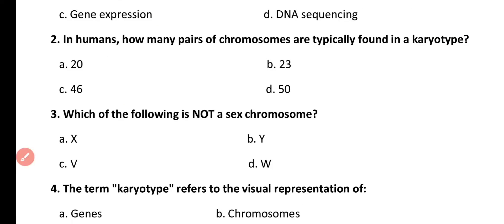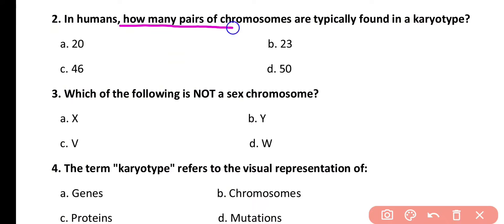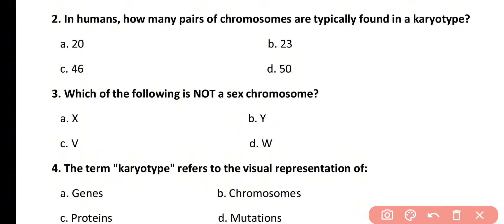Question number 2. In humans, how many pairs of chromosomes are typically found in a karyotype? Options: 20, 23, 46, 50. Correct answer is option B. 23 pairs of chromosomes are present in a karyotype normally.